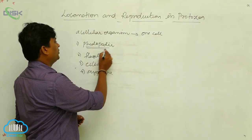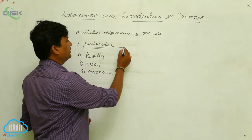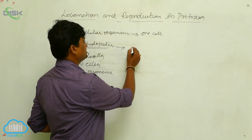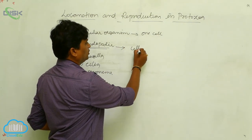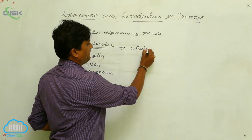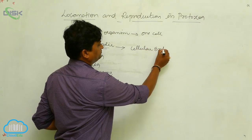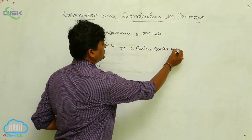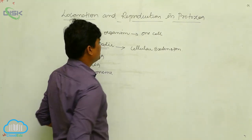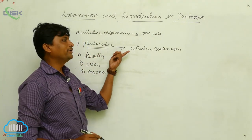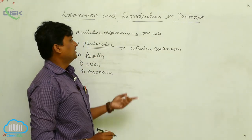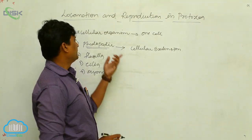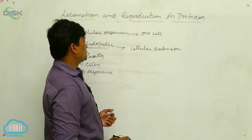The first one is pseudopodia. Pseudopodia are nothing but cellular extensions. There are different types of pseudopodia present in protozoans.